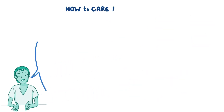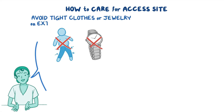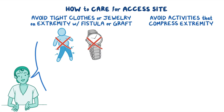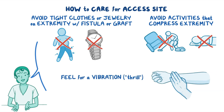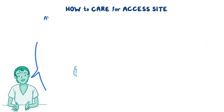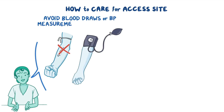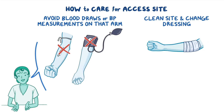Next, teach them how to care for their dialysis access site. Instruct them to avoid tight clothes or jewelry on the extremity with the fistula or graft and to avoid activities that compress the extremity, such as carrying heavy items or sleeping on the affected side. Also teach them how to feel for a vibration called a thrill over the access site, and explain that a thrill means the access site is intact and working. Emphasize the importance of avoiding blood draws or blood pressure measurements on that arm.